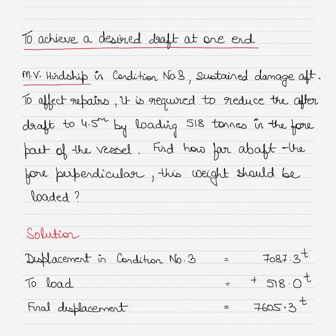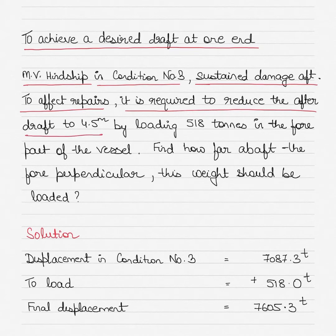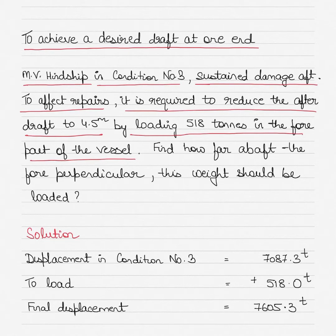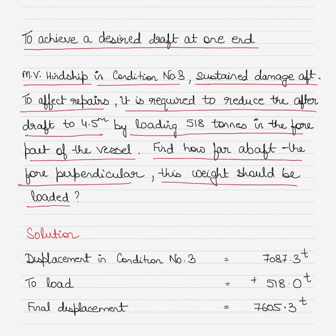The question says that motor vessel Henship is in condition number three and has sustained some damage aft. To affect the repairs, it is required to reduce the aft draft to 4.5 meters by loading 518 tons in the forward part of the vessel. You have to find out how far from the forward perpendicular this weight should be loaded so that the forward part goes down and the aft part comes up, reducing the after trim.